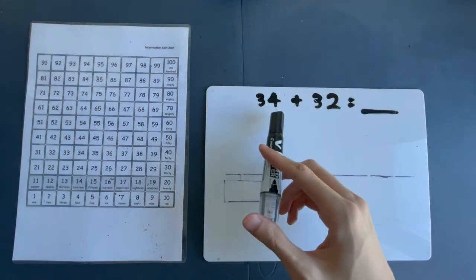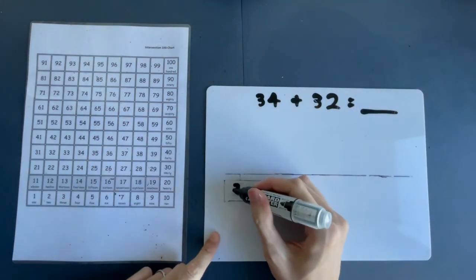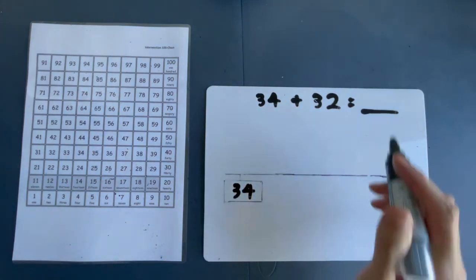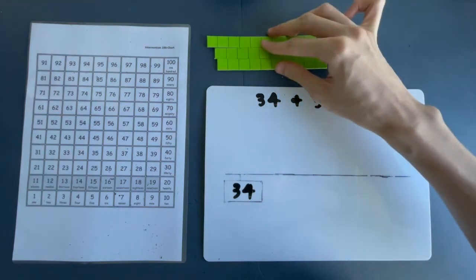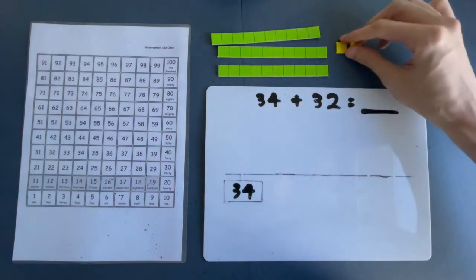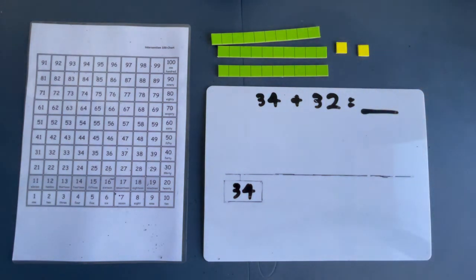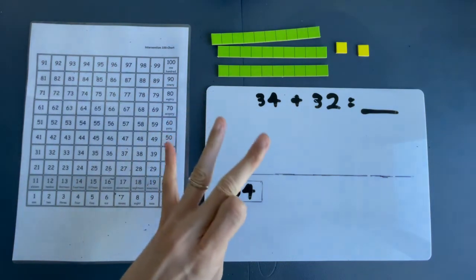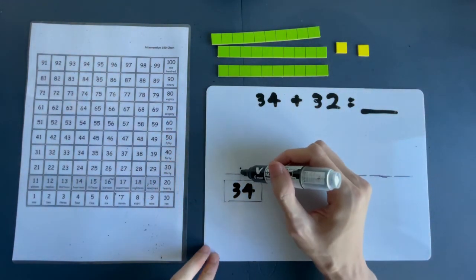Last example. 34 plus 32. So, I'm going to copy down 34 here. And so, how do we jump with 32? 32 is made out of 3 tens. 10, 20, 30. And 2 ones. 30, 31, 32. So, we are going to make 3 big jumps and 2 small jumps. Let's do that now.